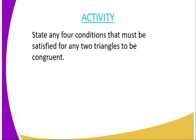We have come to the end of today's lesson, and I'm going to end this lesson by giving you an assignment. State any four conditions that must be satisfied for any two triangles to be congruent. As we have already discussed them, so you are supposed to state them as I have explained them in this session.